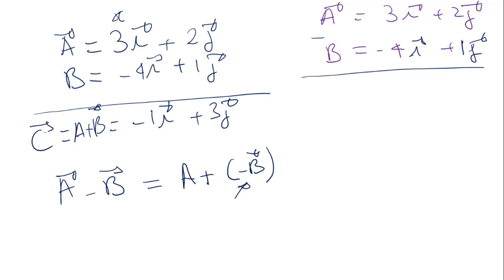Now, what would be? If I have minus B, what would be? It will be 4i minus 1j. So, this is what would be minus B. This is the same thing as you have A plus and minus B. This minus B, it becomes plus here and negative here.